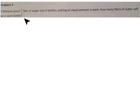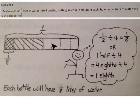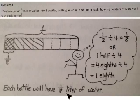This problem reads: if Melanie pours one-half liter of water into four bottles, putting an equal amount in each, how many liters of water will be in each bottle? We show with our tape diagram that we have one-half liter of water — our whole is one, we have one-half of it. That is divided into four equal parts, and we divided the other half also into four, so we would have the same unit. One-half divided into four equal parts means each part will be one-eighth. One-half divided by four equals one-eighth, which is four-eighths divided by four. Each bottle will have one-eighth liter of water.